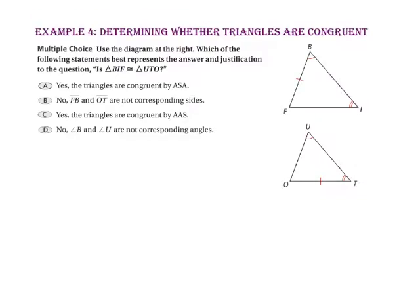In example four, we will determine whether triangles are congruent using the diagram. The question is: is triangle-BIF congruent to triangle-UTO? In both triangles we have two angles and a non-included side that are congruent. However, side-BF is not corresponding to side-OT — side-BF is corresponding to side-UO. Therefore, we cannot prove the triangles are congruent because side-BF does not correspond to side-TO. The answer is B.